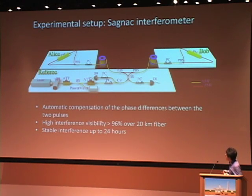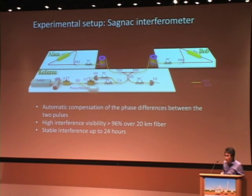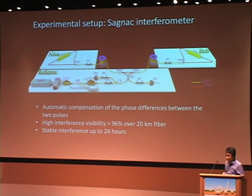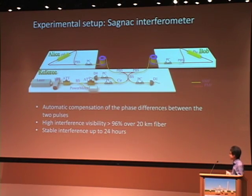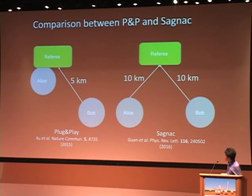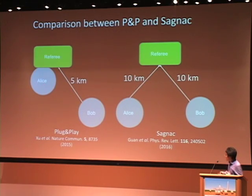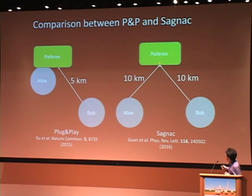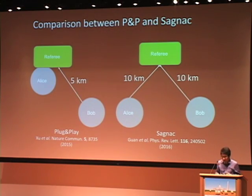Some features of the system: we can automatically compensate the phase difference between the two pulses. We have a very high visibility of about 96% over 20-kilometer fiber, and stable interference up to 24 hours. As a comparison, with plug-and-play, one of the users must be close to the referee. With the Sagnac interferometer, we can separate both Alice and Bob far from the referee — our experiment uses 10-kilometer channels for each.